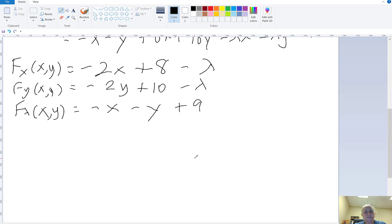Now, to solve this, we set each one of them equal to 0. Negative 2x plus 8 minus lambda equals 0. Negative 2y plus 10 minus lambda equals 0. Minus x minus y plus 9 equals 0.